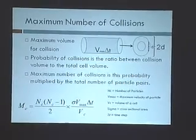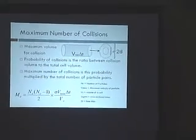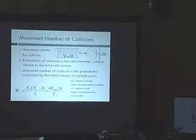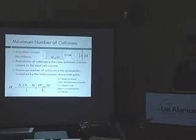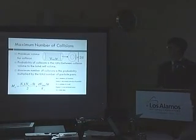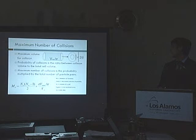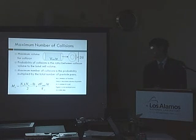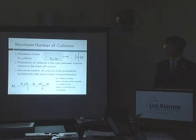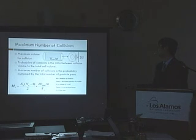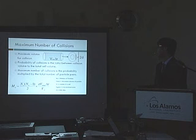If we divide this volume by the total volume in the cell, what we get is a rough probability of the collision. Finally, we multiply this by the maximum number of particle pairs, which is the number of particles choose 2. That gives us the following equation: M_C, the number of particle pairs, multiplied by this probability.